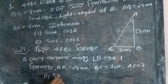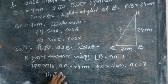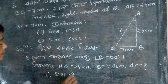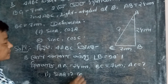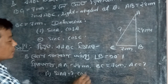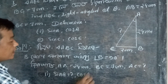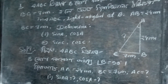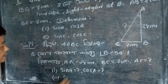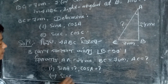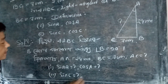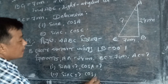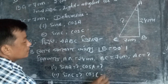We have to find: number 1 — sin A equal to what, cos A equal to what; number 2 — sin C equal to what.